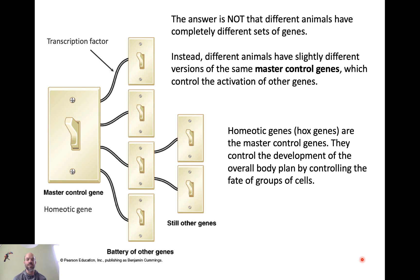Development is controlled by a set of master control genes, as this figure shows. Different animals have only very slightly different versions of the same master control genes, which control the activation of other genes, which in turn control the activation of yet more genes. You have this network of regulation where a small number of master control genes control the turning on and off of many others. With the same set of master control genes, you can turn on or off different components of the overall system — and that is what determines whether you develop into a bee, a lizard, a human, or a worm.